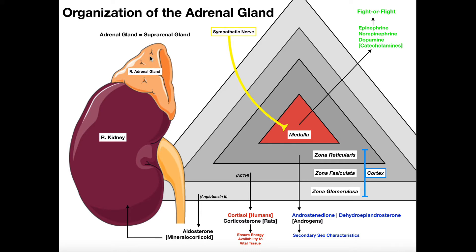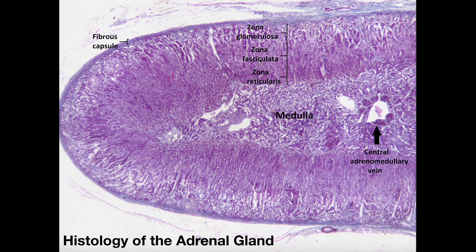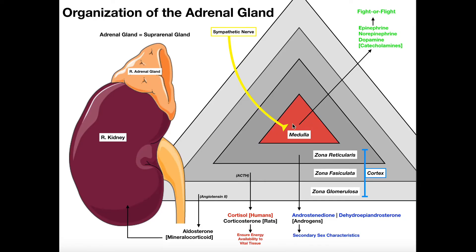There are two adrenal glands. Each is organized into four separate regions: three more superficial regions collectively called the cortex — each with a separate function — and the central part of the adrenal gland is the adrenal medulla. At the end of the video we'll look at the histology.